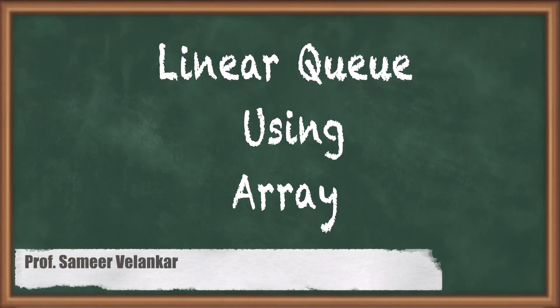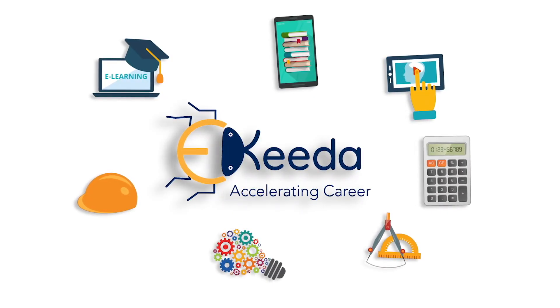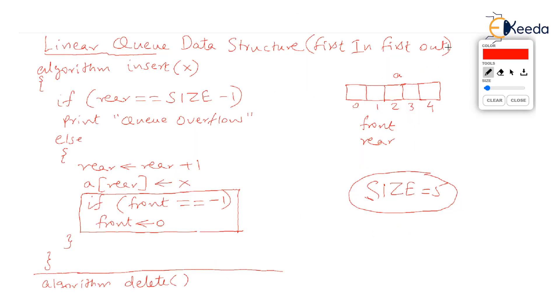Hello dear students, I am Samir Velankar. I welcome all of you to this video on the topic linear queue data structure. We will see two types of queue in this series: linear queue in this video, and circular queue in the next video. Queue is a first in first out data structure.